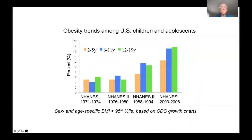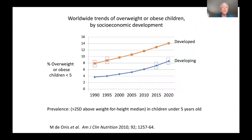Obesity in adults begins in childhood. Here we look at obesity trends among U.S. children and adolescents. These are data from the NHANES over about a 35-year period, looking at the percentage of overweight and obese children — you can see which way the trend line is going, even in the youngest children. Here are worldwide trends of overweight and obese children according to socioeconomic development. The rates are lower in developing countries, but they're going up as well, on the same trajectory but with a 30-year lag.